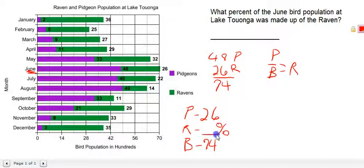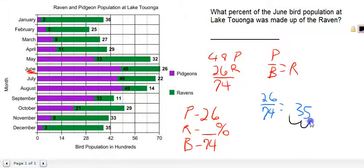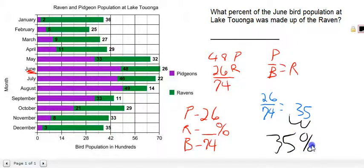In this case, that percent is what we're looking for. So we simply fill in the blank: 26 for the part, divided by the base of 74. And 26 divided by 74 equals 0.35. We round it up, and remember to convert a decimal to a percent, we move the decimal point two spaces to the right and add the percent sign. That gives us 35%, which is our answer.